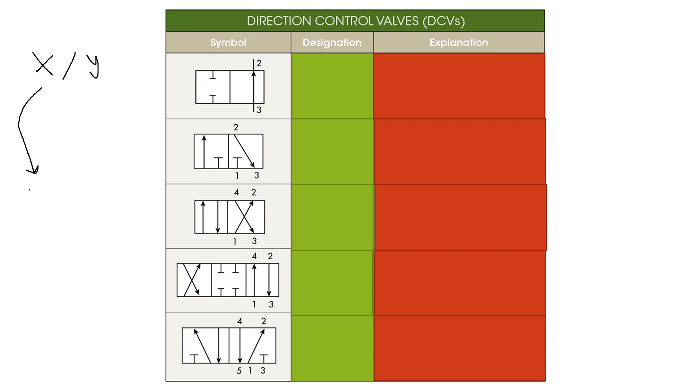X being the number of ports a directional valve has, and y being the number of positions the directional control valve has.